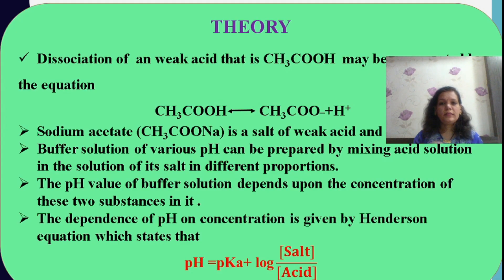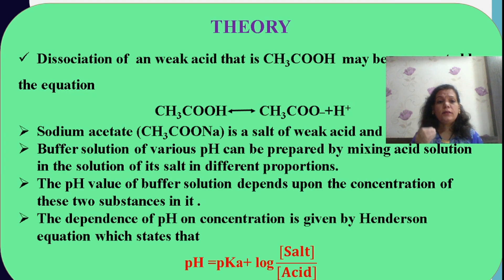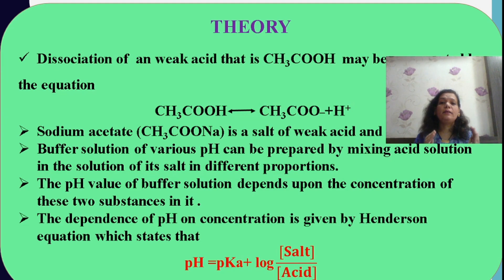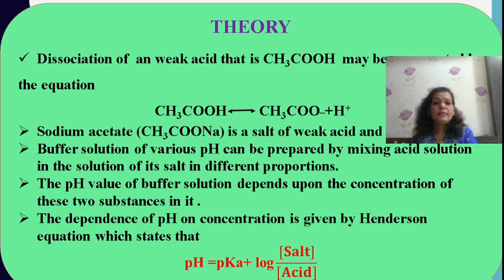The weak acid dissociates to form CH3COO⁻ and H⁺ — it dissociates weakly, slowly. The strong salt of this particular weak acid is sodium acetate; it is a salt of weak acid and strong base. So, a combination of weak acid and its salt of strong base forms a buffer solution. A buffer solution is one which resists small changes in pH. This combination falls under the heading of acidic buffer. A basic buffer is one where a weak base and its salt of strong acid form a basic buffer.